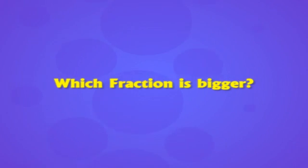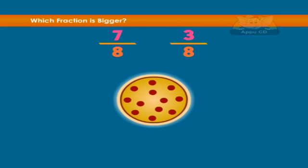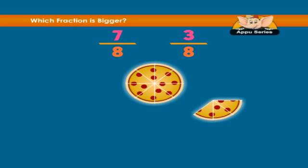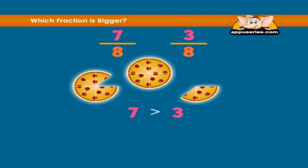Which fraction is bigger? Given two numbers, which is bigger: seven eighths or three eighths? Let's look at a pizza for this example. The denominators are both eight, so let's look at a pizza which is cut into eight pieces. If you are hungry, would you want three pieces or seven pieces? Seven is definitely more than three, hence seven eighths is greater than three eighths.